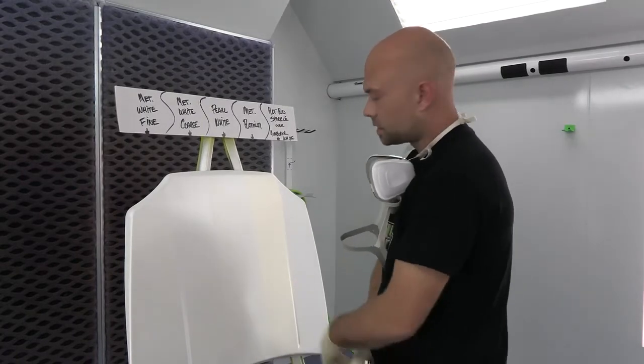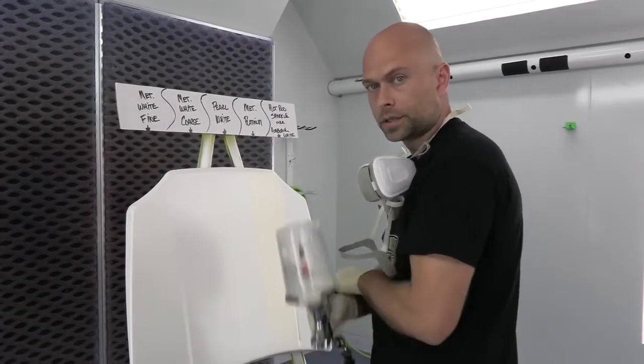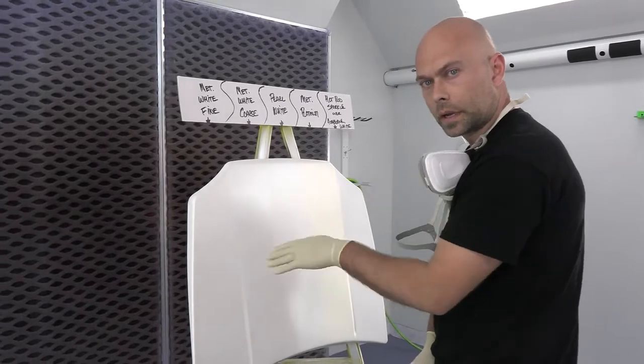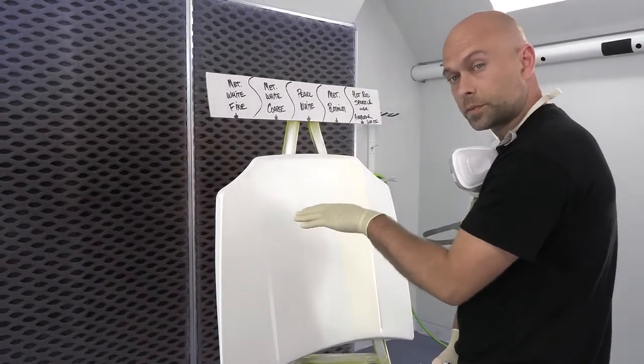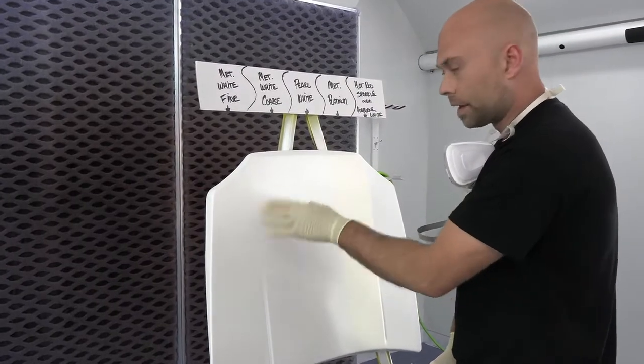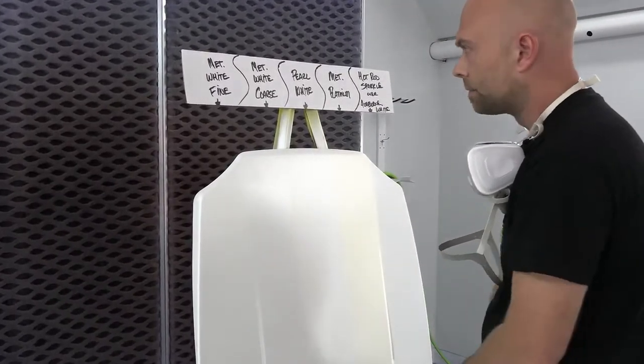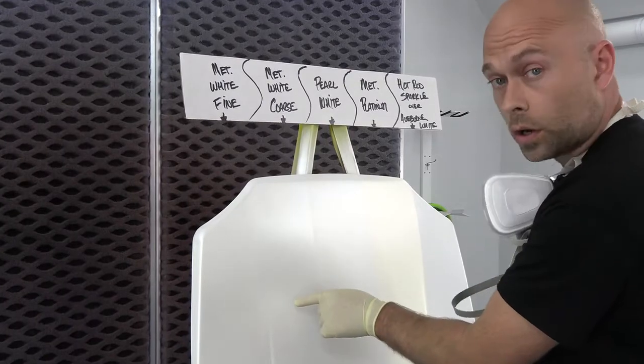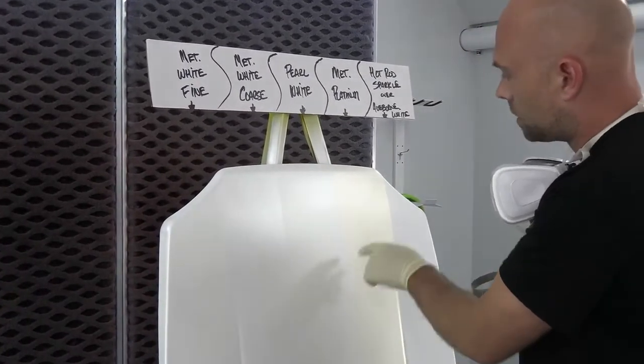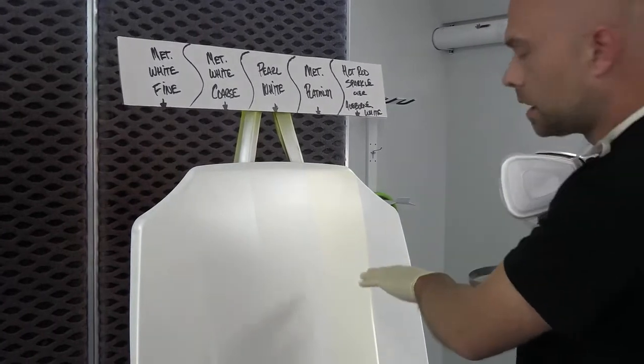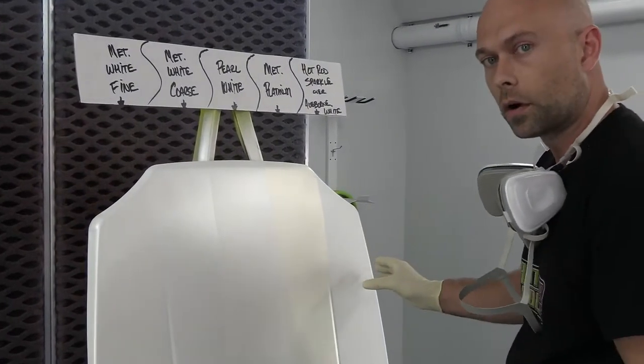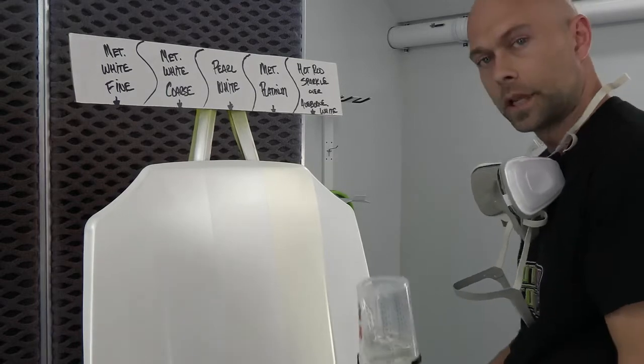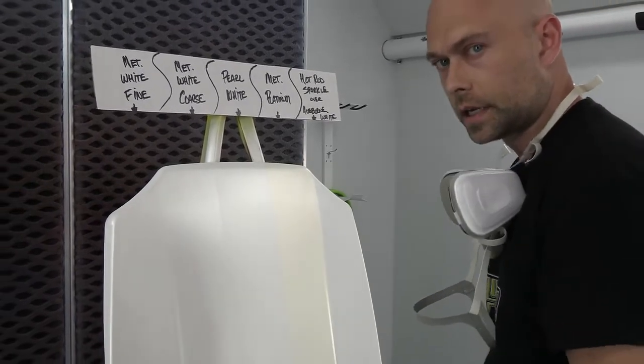All right everyone, we're back in the booth. It's been about an hour since our last coat went down, so everything's nice and dry. We're going to put some 2K automotive clear over the top so you can see what it looks like. I'm not quite sure if you can pick up the difference in the booth lighting. The difference is really subtle, but that's the beauty part of what we are going after to show you how you can create texture with different metallics. To recap, this is our metallic white fine, metallic white coarse, pearl white, metallic platinum, and hot rod sparkle white over autoborn sealer white. We're going to put some clear down and then try to get it outside so you can see what it looks like in the sun.